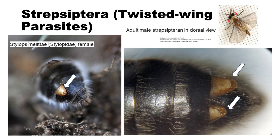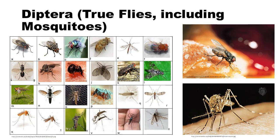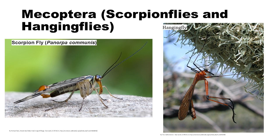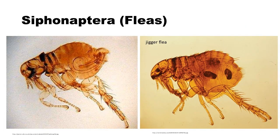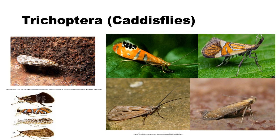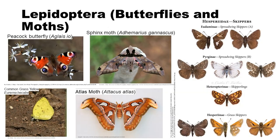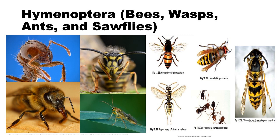Strepsiptera — twisted-winged parasites. Diptera — true flies, including mosquitoes. Mecoptera — scorpion flies. Siphonaptera — fleas. Trichoptera — caddisflies. Lepidoptera — butterflies and moths. Hymenoptera — bees, wasps, ants, and sawflies.